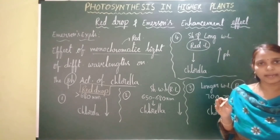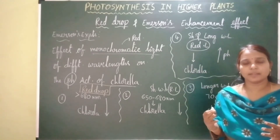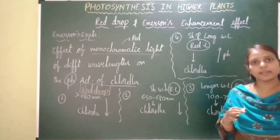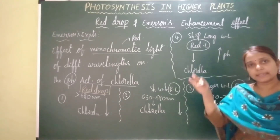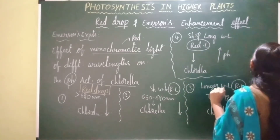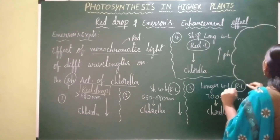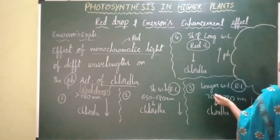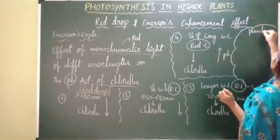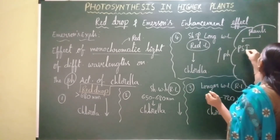After conducting all these experiments, based on the results he concluded that there are two types of photosystems in plants — one photosystem getting activated at shorter wavelength of red light and the other at longer wavelength of red light. These two photosystems are photosystem one and photosystem two.